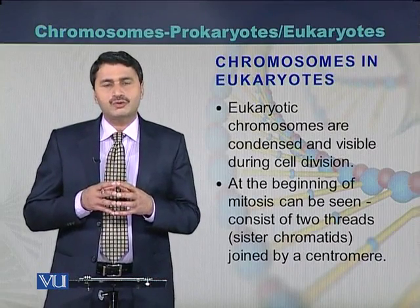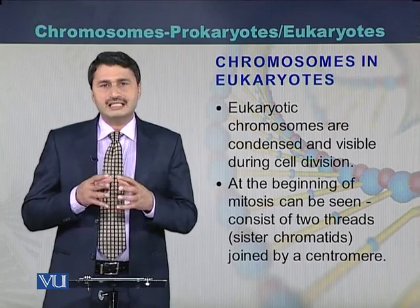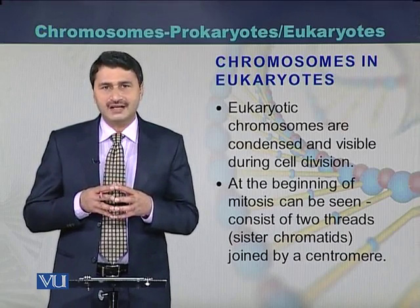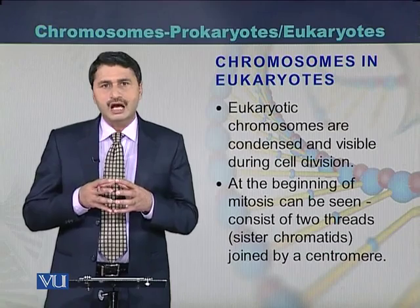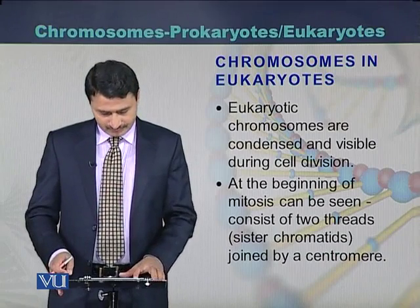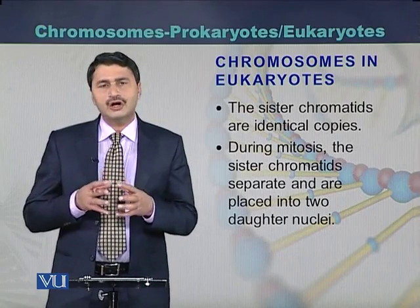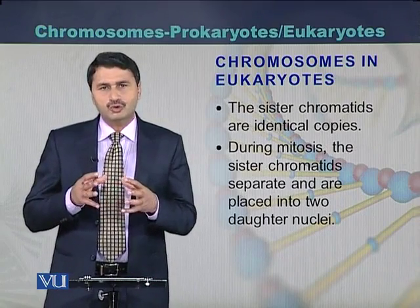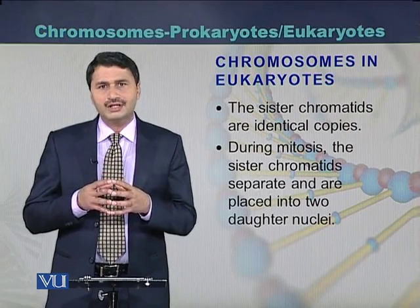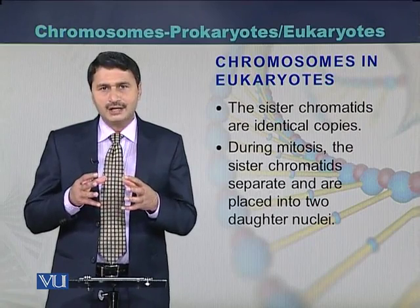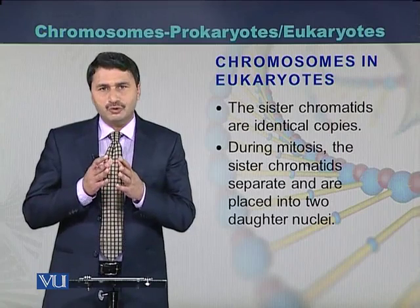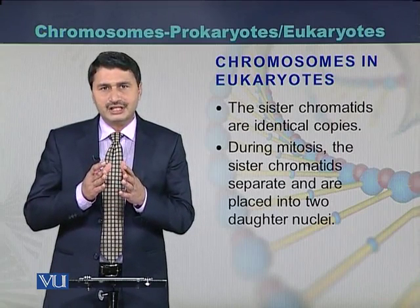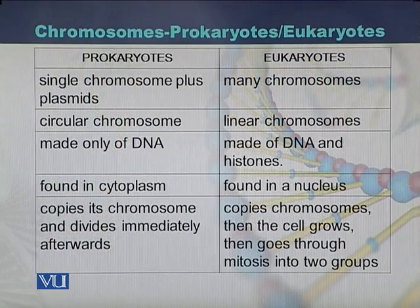Eukaryotic chromosomes are usually visible during cell division at the stage of metaphase. If the cell is functional, the eukaryotic chromosomes cannot be seen. Eukaryotic chromosomes consist of two chromatids, which are called sister chromatids. Sister chromatids are joined by the centromere, and during cell division both sister chromatids separate from each other.